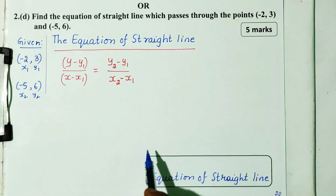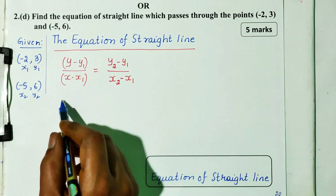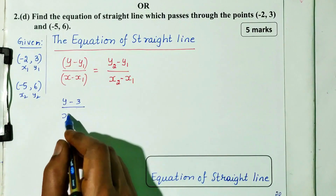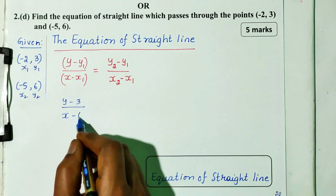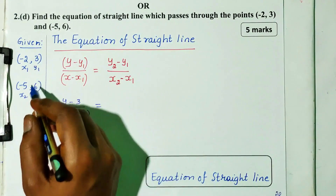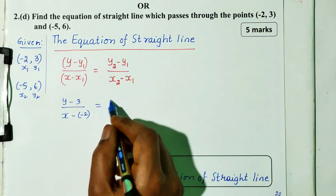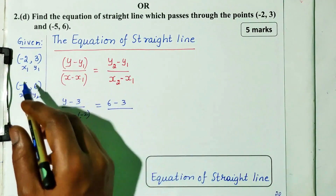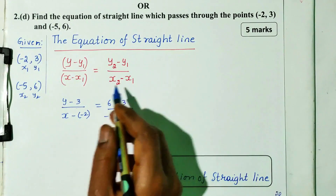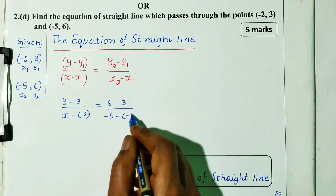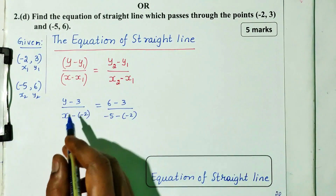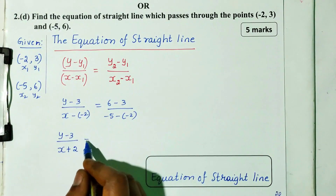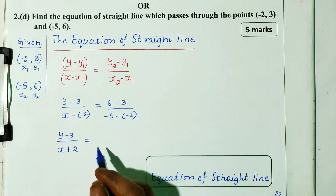I will substitute into the two-point formula. So y minus y1 divided by x minus x1 equals y2 minus y1 divided by x2 minus x1. Substituting: y minus 3 divided by x minus negative 2, equals 6 minus 3 divided by minus 5 minus negative 2, which gives 3 divided by minus 3, equal to minus 1.